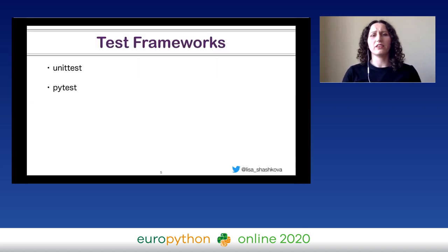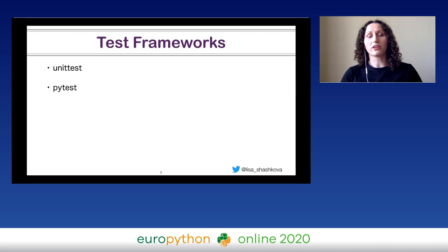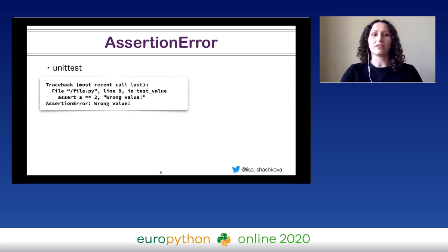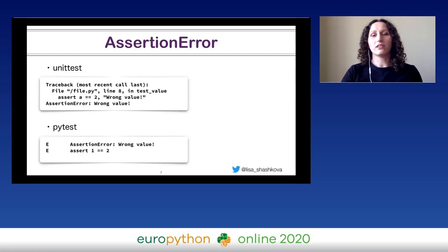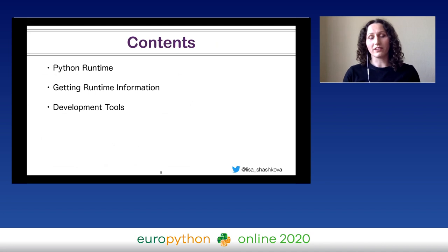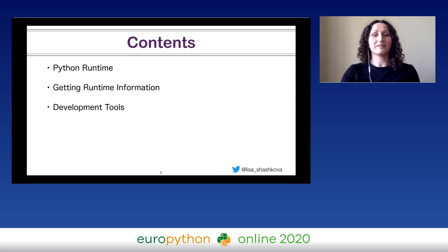For example, we run tests every day. The two most popular ways to do it are either the built-in module unittest or the popular test framework PyTest. When your code raises an assertion error, unittest will just show you that this assertion error was raised and show you where it was raised. But if your code raises an assertion error with PyTest, it will show you not only the location of this error, but also values of variables which you tried to compare. Where did PyTest get this information? From the Python runtime. Today we will learn how Python runtime works, how you can get useful information from it, and how different development tools can use this information to make developers' lives better.